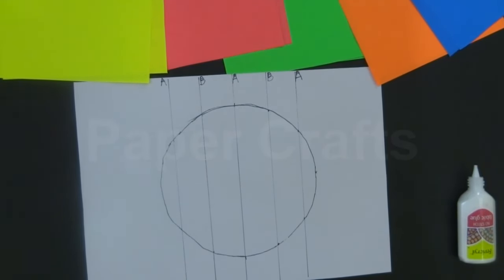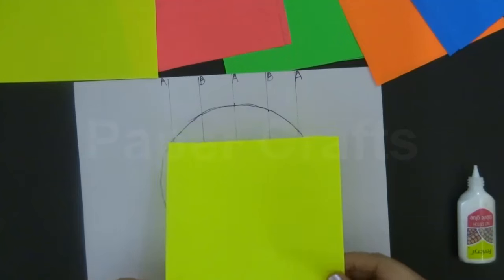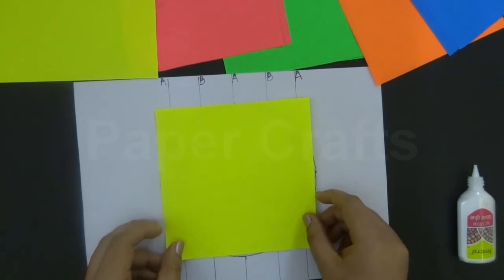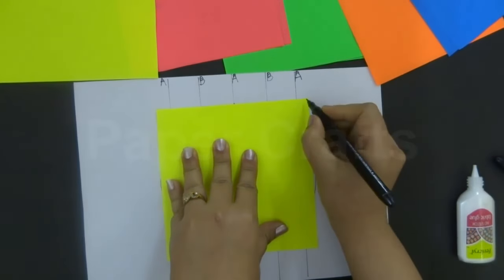We will take colored sheets of approximately 6 by 6 inches. Place the colored sheet over the circle and mark the reference points along the corners.